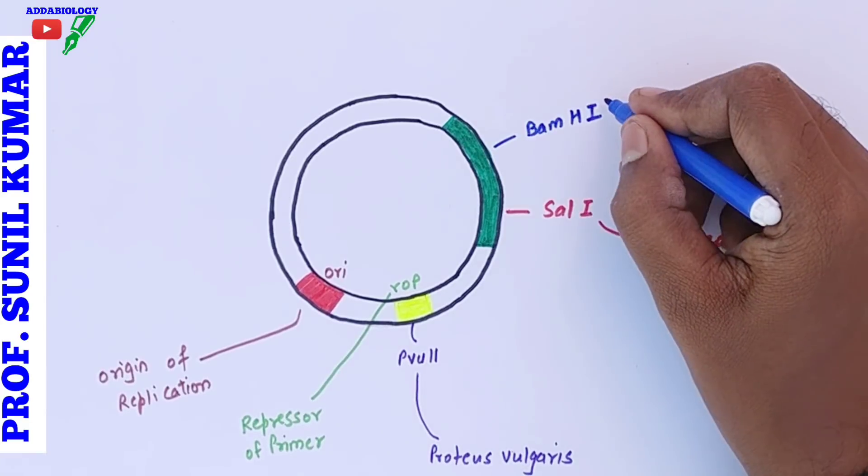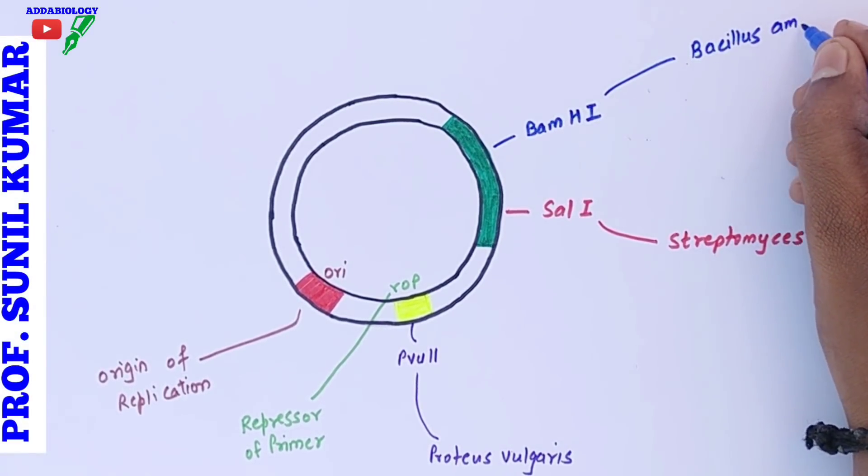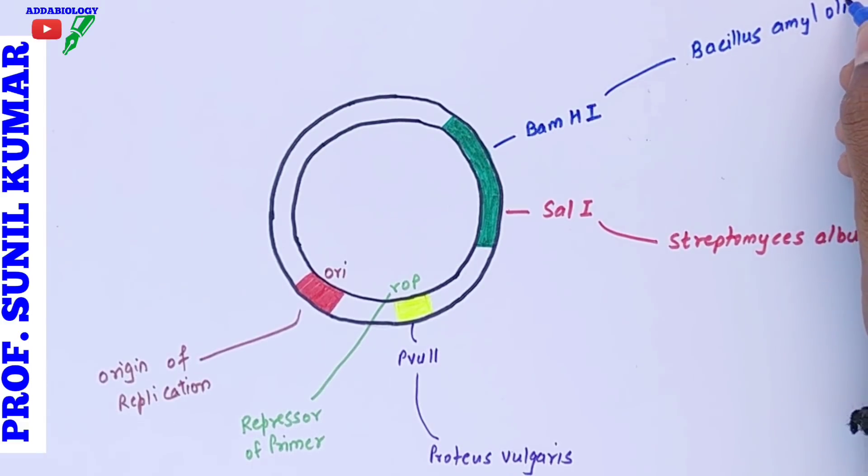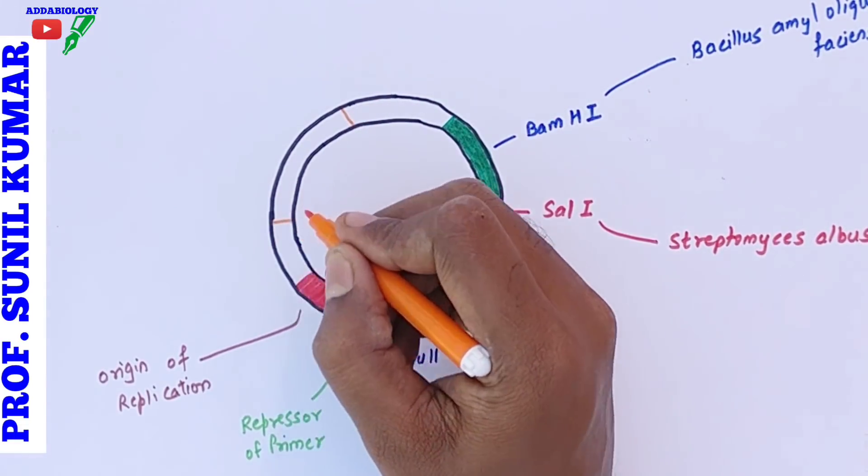Above we have BamHI. B stands for the genus Bacillus, am stands for the species amyloliquefaciens, H is the strain, and 1 is the order to be discovered. So BamHI is Bacillus amyloliquefaciens.